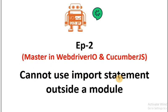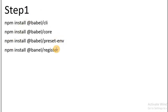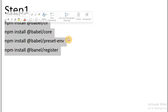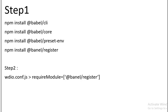This is how you can fix the error 'Cannot use import statement outside a module'. To summarize: Step 1 — install these four Babel libraries. Step 2 — go into your wdio.config.js file and configure babel/register under the require module inside cucumberOpts. That's it — that is all you need to do.